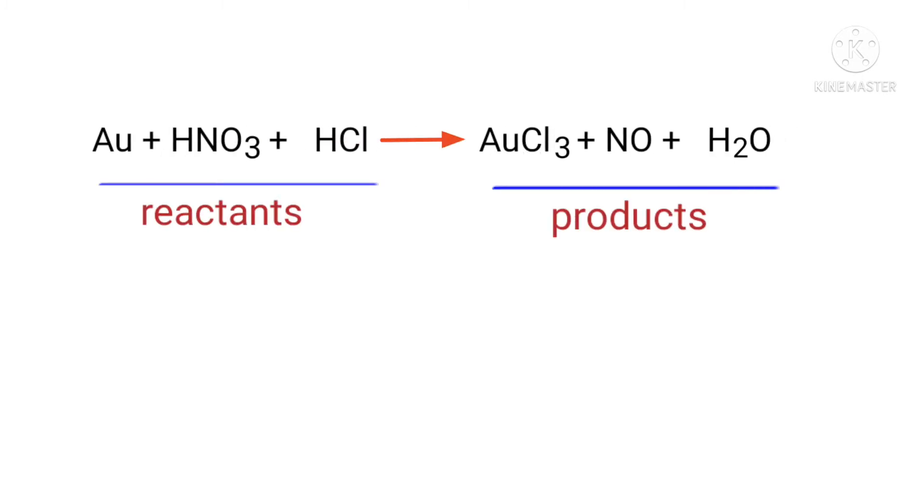In this equation, the reactants are gold, nitric acid, and hydrogen chloride, and the products are gold trichloride, nitric oxide, and water.